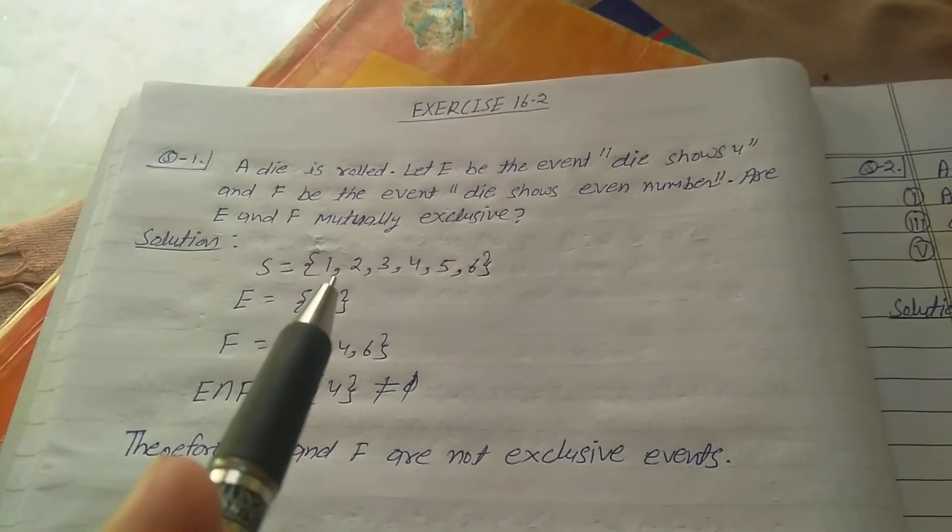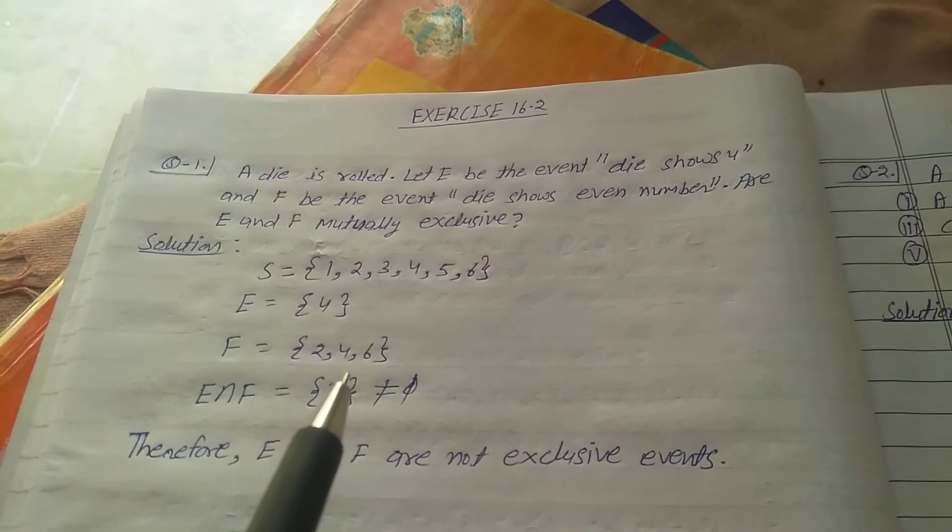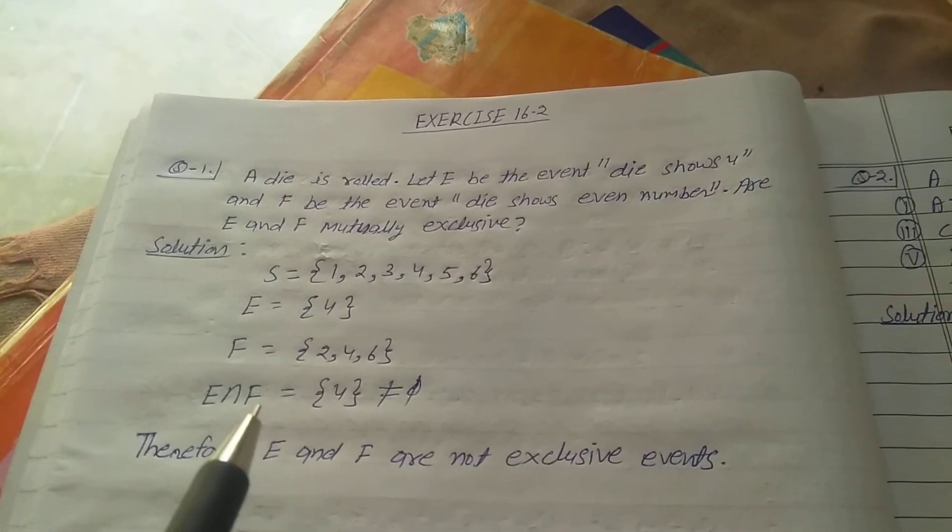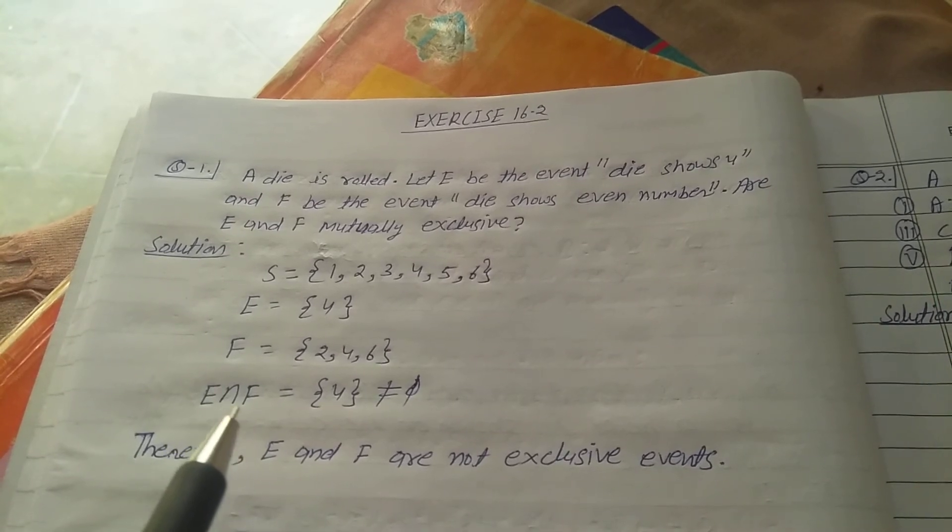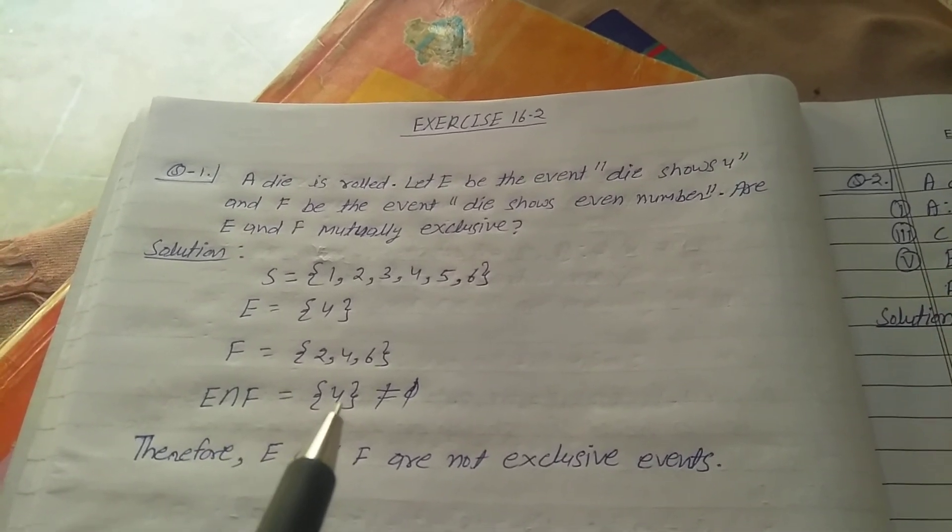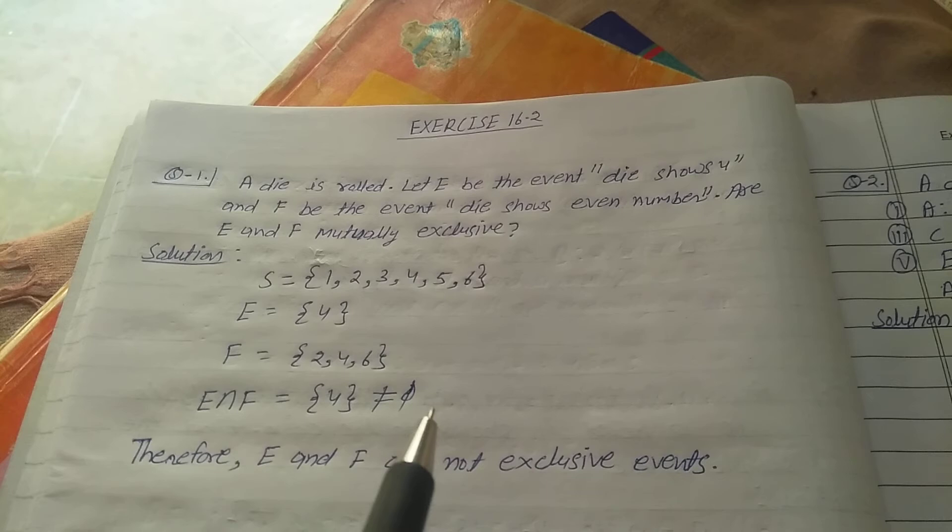So the condition is given: are E and F mutually exclusive or not? The intersection of E and F, E intersection F equals {4}, which is not equal to empty set.